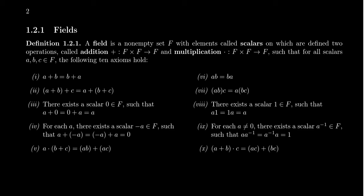The third property is about identities. There exists an element which, when you add it to any other element, you always get back the original element. This element we call zero — the additive identity. The additive identity means that a plus zero equals zero plus a, which equals a. Adding zero doesn't do anything. We also require a multiplicative identity, which we call the number one. One has the property that a times one equals one times a, which is just a itself — multiplying by one doesn't change the other number. We require that field operations of addition and multiplication both have identities.